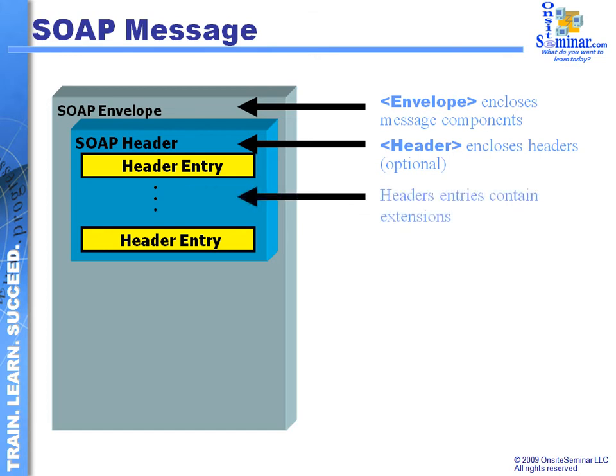Inside the SOAP header area, we're going to have different kinds of extensions and entries. Beyond the authentication piece, the other thing we might see defined in here might be complex types. Complex types happen when we're passing objects around — objects will need to be defined, and we'll need some type of description of what that object is going to contain. The complex type area of the header is what's going to define that.